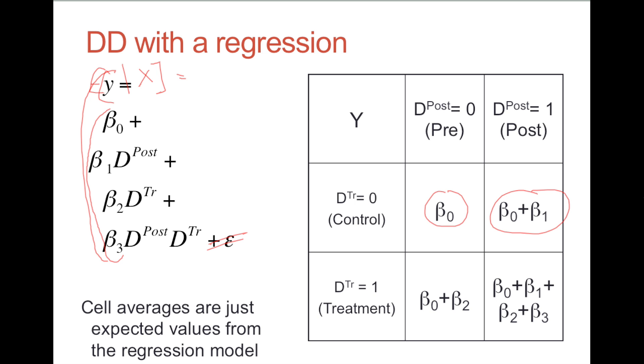The difference across time in the control group, remember that was D2, that's going to be just beta 1. The difference across time in the treatment group is going to be beta 1 plus beta 3. And the difference between the two is beta 3. When we run this regression, we're getting an estimate, an unbiased estimate of this coefficient, which again is our difference-in-difference estimate.